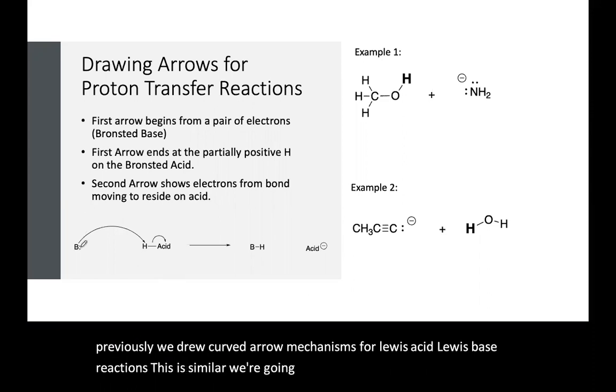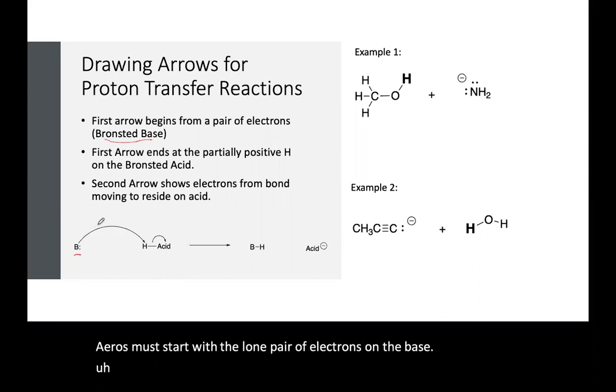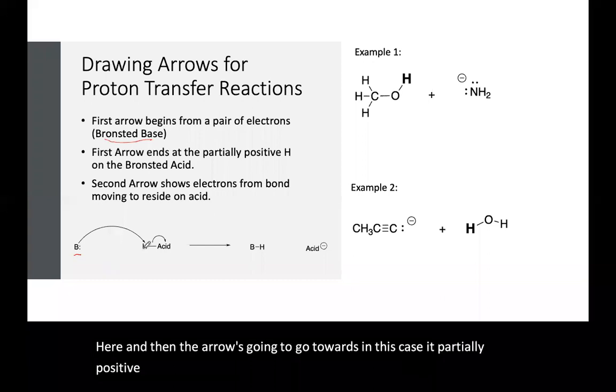We're going to see the same convention where the arrows must start with the lone pair of electrons on the base here, and then the arrow is going to go towards, in this case, a partially positive H on the Bronsted acid.